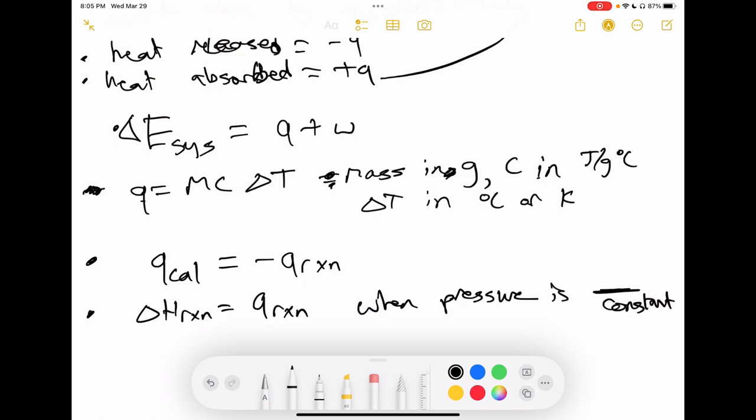Another note, whenever you're using Q equals MC delta T, watch out for the units because probably 99% of the time you'll be given the C in units of joules per gram Celsius. And it may give you some heat in kilojoules. You need to convert that to Q in terms of joules, just so all the units cancel out and at the end, you're only left with grams.